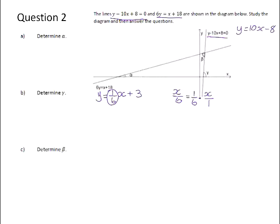Determine alpha. Now, alpha is the angle of inclination of the line y equals 1 over 6x plus 3. So therefore, the tan of angle alpha will equal 1 over 6. So the shift tan of 1 over 6 will give us alpha, which is 9.5 degrees.